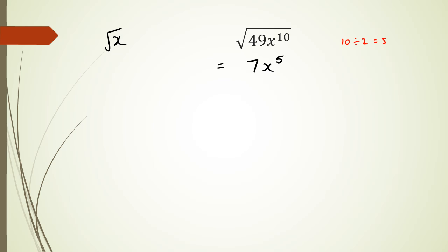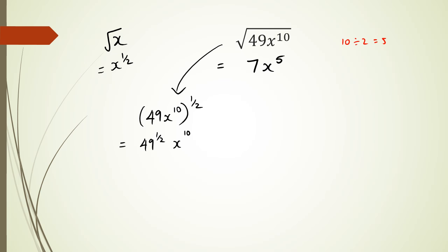Something useful to know: square root of x can be written as x to the power of a half. So going back to the question — square root of 49x to the power of 10 — I can write it as 49x to the power of 10, all to the power of a half. Using the same ideas as before: 49 to the power of a half is the same as square root of 49, which is 7, and x to the power of 10 times a half gives x to the power of 5. So the answer is 7x to the power of 5.